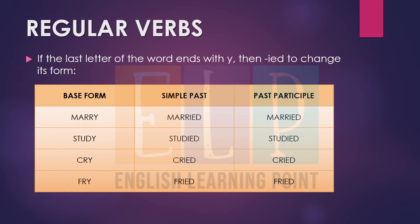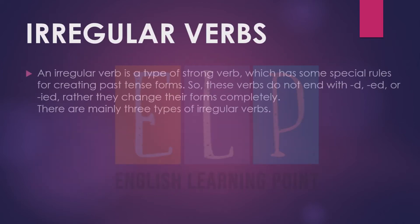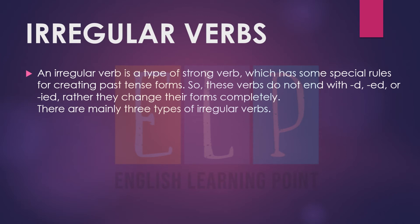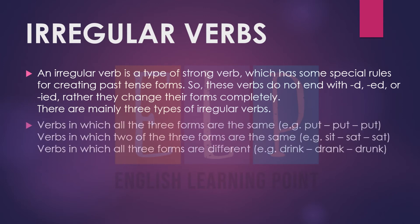Now let's move to irregular verbs. An irregular verb is a type of strong word which has some special rules for creating past tense forms. These verbs do not end with D, ED, or IED — rather they change their forms completely. There are mainly three types of irregular verbs. Unlike regular verbs where we can use D, ED, and IED to change their forms, in irregular verbs we change them completely.